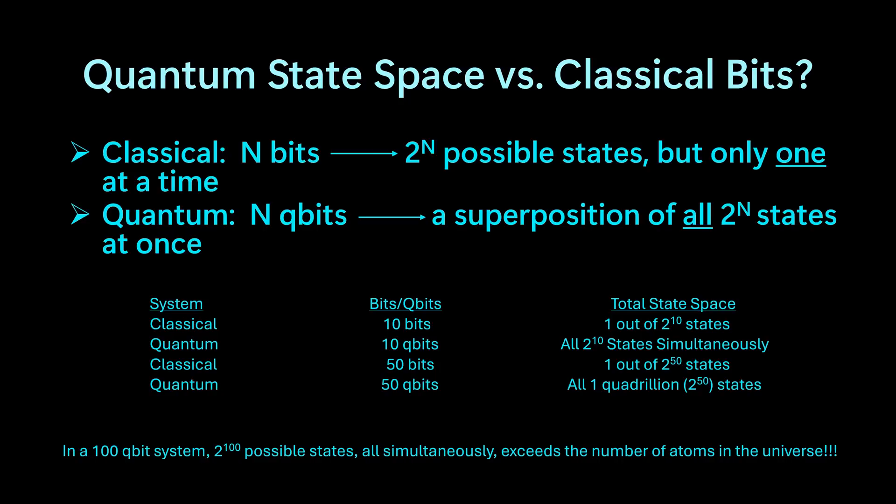Earlier, I mentioned superposition and entanglement. This is why. In the chart below, you can see how the real power in a quantum system is its ability to represent many states at once, while a classical system can only explore one state. So you can see that in a 100-qubit system, you have 2 to the 100 possible states, which exceed the number of atoms in the universe.